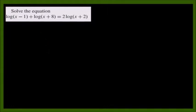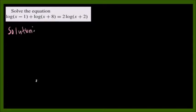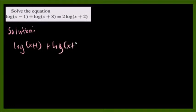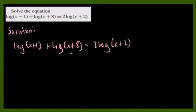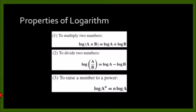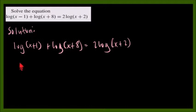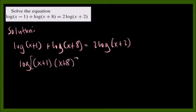First we will apply the properties of logarithm. Using the multiplicative property, we multiply the two quantities — x plus 1 and x plus 8 — so we end up with log[(x plus 1)(x plus 8)] on the left side, and this equals the right side.